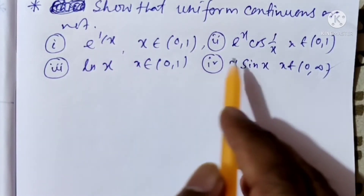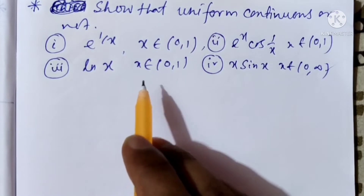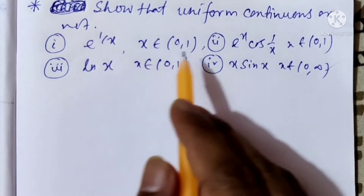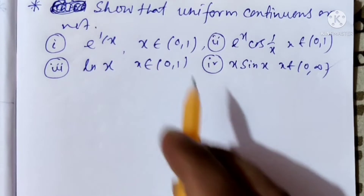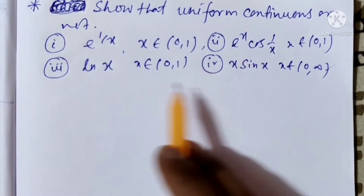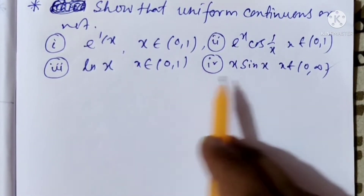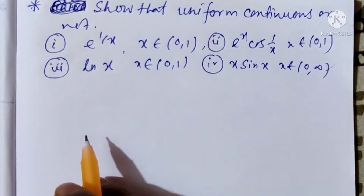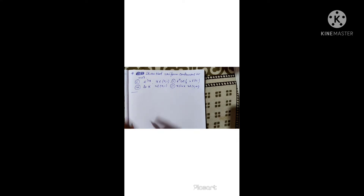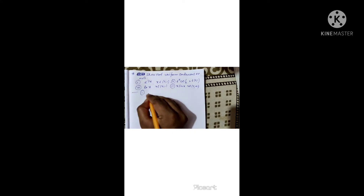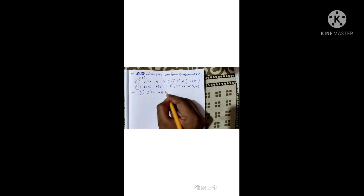Which of these are uniformly continuous? We now show that further functions are not uniformly continuous, starting with f(x) = e^(1/x) on the open interval (0,1).